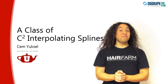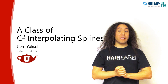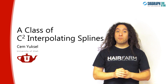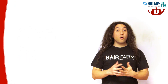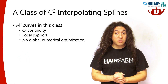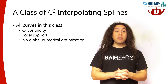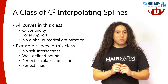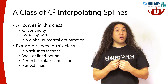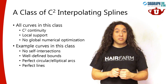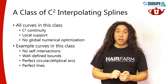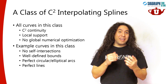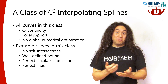Hi, my name is Jem Yuxell, and I'm going to talk about a class of C2 interpolating splines that provide solutions to some important and long-standing problems for curves used in computer graphics and other fields. More specifically, all curves in this class have C2 continuity everywhere and local support, and they do not require solving a global numerical optimization problem. I'm also going to talk about some specific example curve types within this class — how we can construct curves that guarantee self-intersection-free interpolation with well-defined bounds through the controlled polygon, how we can form perfect circular arcs and elliptical arcs, and perfect lines, while apparently lines can be tricky with C2 interpolating curves.